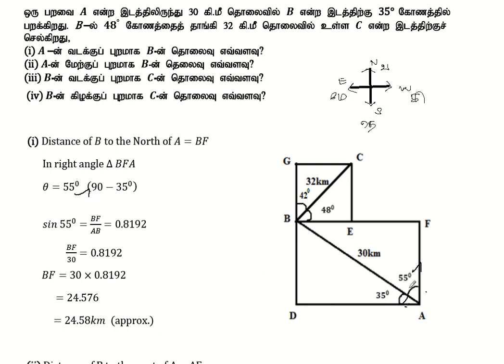Let's say BFA, right angle BFA, we call sin theta. Why sin theta? Sin theta is opposite by hypotenuse. We call hypotenuse theorem, that's why we call hypotenuse theorem.